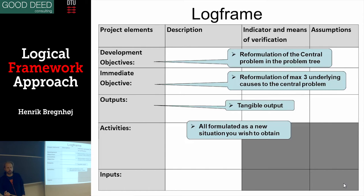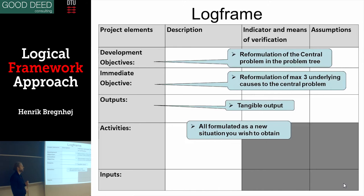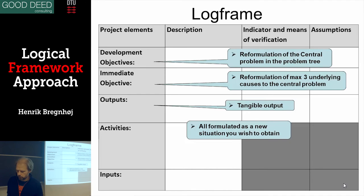The central problem in the problem tree is where you come from — the problem tree leads to the log frame matrix. The central problem becomes the basis, and you could have some underlying causes you want to solve. These should become maximum three immediate objectives — formulated as tangible outputs you can measure. All of this is formulated as a new situation you want to obtain.